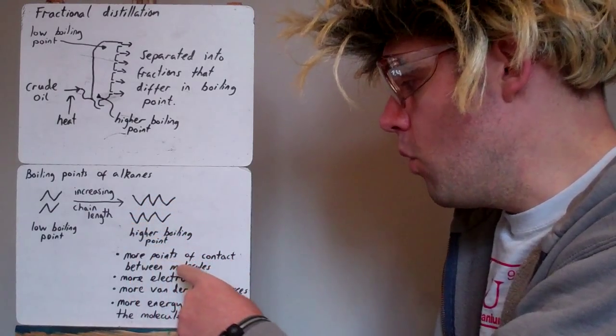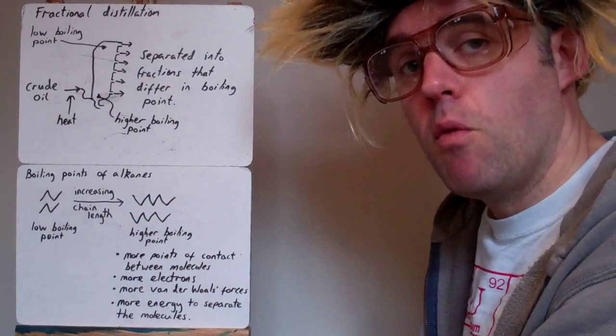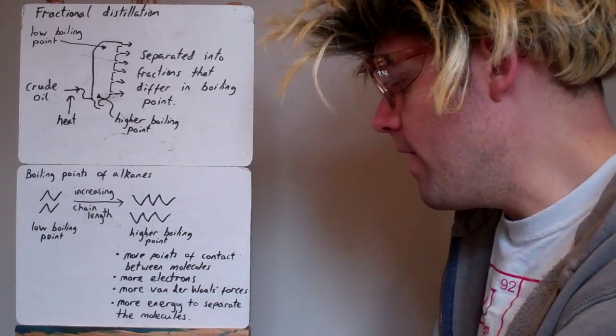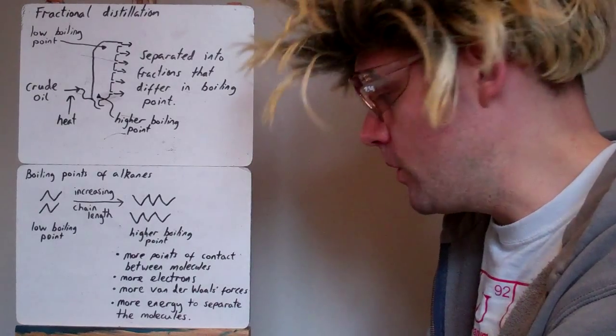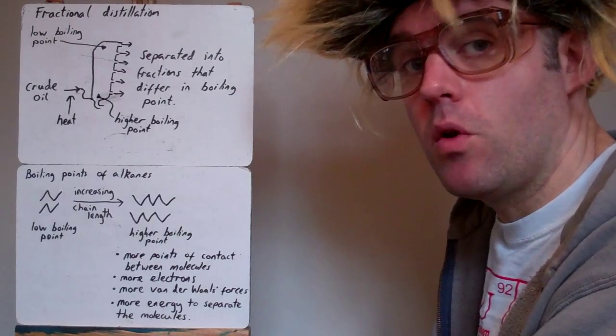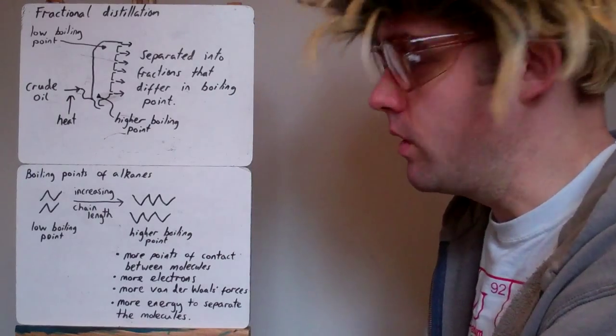Longer alkanes have more points of contact between the molecules. They also have more electrons. So both these two factors mean that there are more van der Waals forces between their molecules. So more energy is needed to separate the molecules because the intermolecular forces are stronger and the chain is longer.